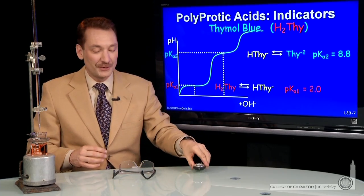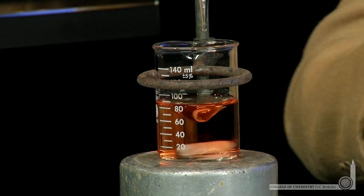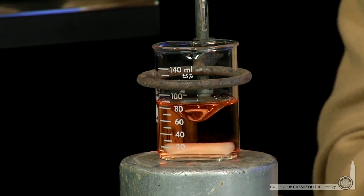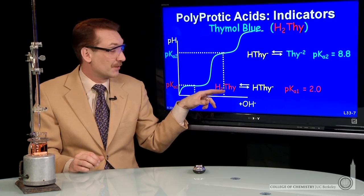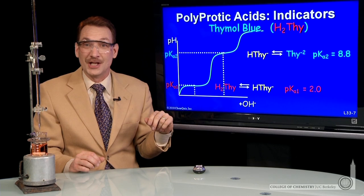So we can watch those three forms. I have a slightly acidic solution here with thymol blue, and it's, you can see, reddish. It's actually not quite below pH 2, so we don't have fully the red form. We have a mixture of the red and the yellow form.